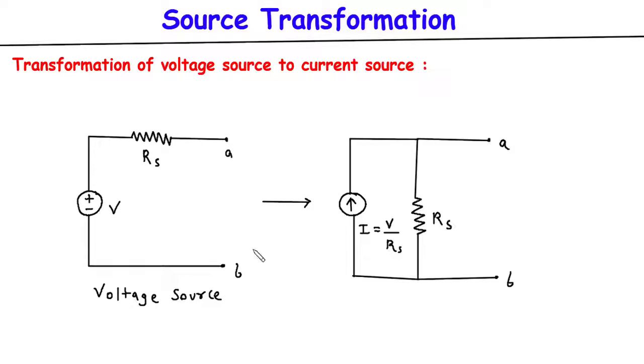And both these circuits are equivalent. Here we can write current source. So this is how we can transform voltage source into its equivalent current source.